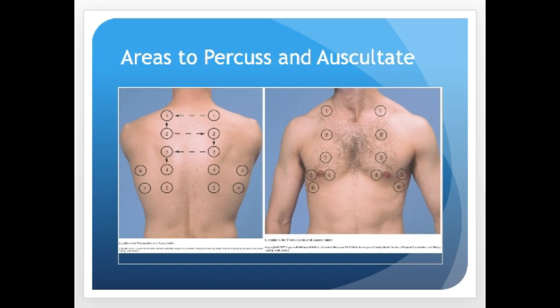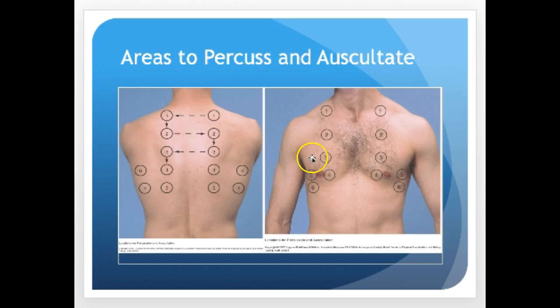The areas to percuss and auscultate follow a ladder pattern, comparing right to left continuously, so the patient becomes their own control — same pattern on the front. If you hear something abnormal, listen to the area around it. You don't need to memorize specific spots; just make sure you're listening on both sides and covering all the different lobes.